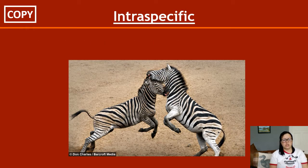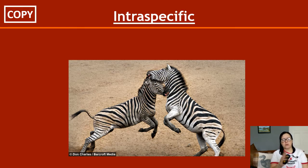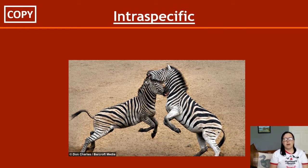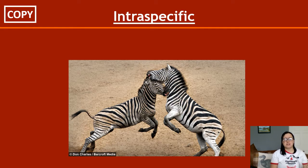Intraspecific competition is competition that occurs between two or more members of the same species. So that would be competition between two zebras, two lions, or two oak trees — it can happen between plants too, they can be quite competitive. When stags rut — I want to say October — they basically fight each other for the right to breed with females, and that again is intraspecific competition.